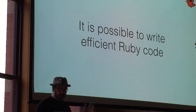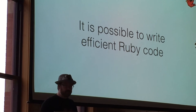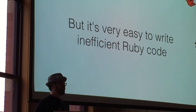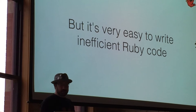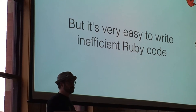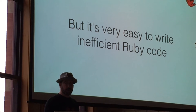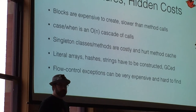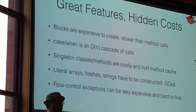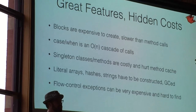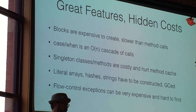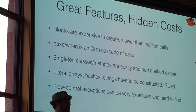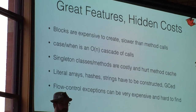And just having a faster runtime or a more parallel runtime is not enough. We need to have some way to look into the system. So there's a lot of great features in Ruby. Like I mentioned, blocks can be expensive to execute. They can also be expensive to create. So when you have like three or four levels of nested blocks, there's a lot of work going on behind the scenes to construct all of those blocks for every one of those loops.